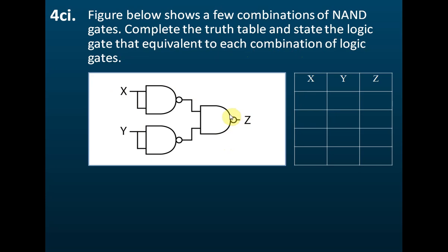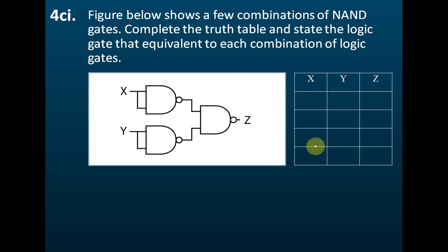To answer the questions, either you memorize it, or you can use the truth tables to find the answer. Since these questions already give us a truth table and want us to fill it in, let's try to use the truth tables to find what the equivalent gate is.